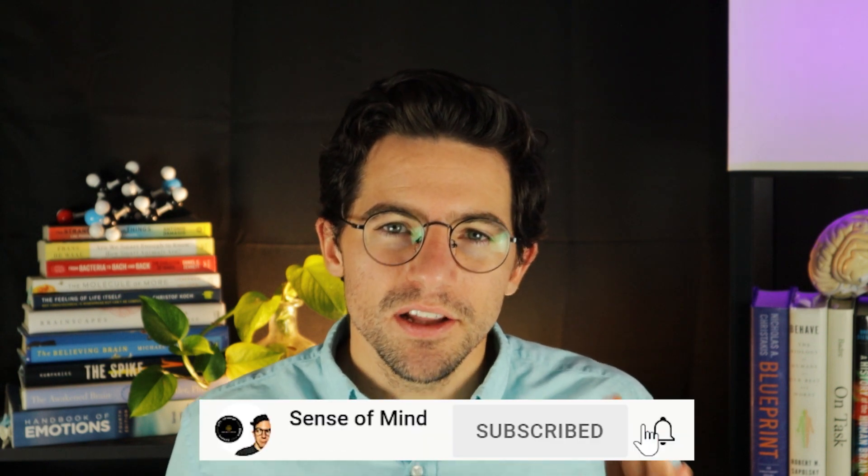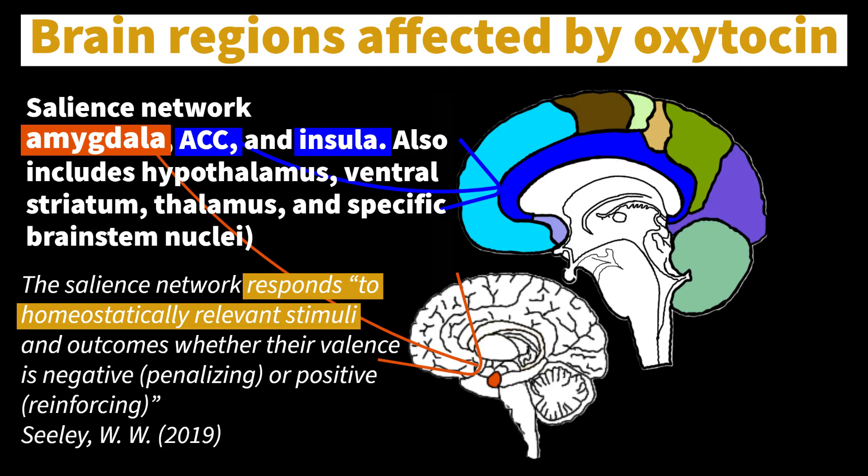Yet when it comes to salience, the brain actually engages a network of regions, including but not limited to the amygdala. According to Grace and colleagues, evidence that intranasal oxytocin increases salience and reward from social stimuli is supported by increases in brain activity following intranasal oxytocin, with a salience network comprising the amygdala, anterior cingulate cortex, and insula. Whilst also increasing salience to social information, these regions contribute to social decision-making processes.